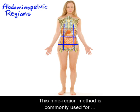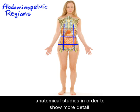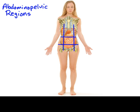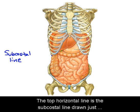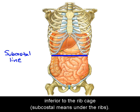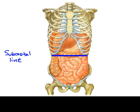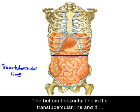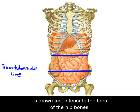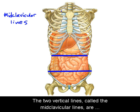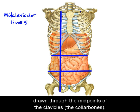This nine-region method is commonly used for anatomical studies in order to show more detail. The top horizontal line is the subcostal line, drawn just inferior to the ribcage — subcostal means under the ribs. The bottom horizontal line is the trans-tubercular line, drawn just inferior to the tops of the hip bones. The two vertical lines, called the mid-clavicular lines, are drawn through the midpoints of the clavicles, the collarbones.